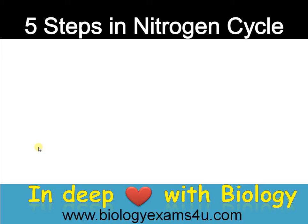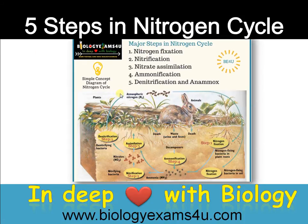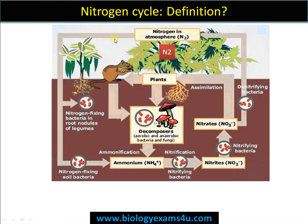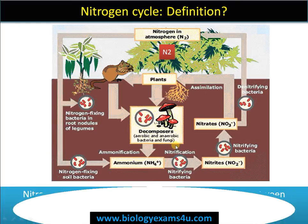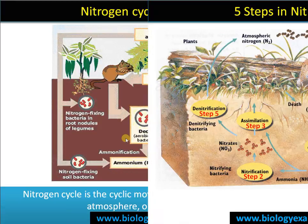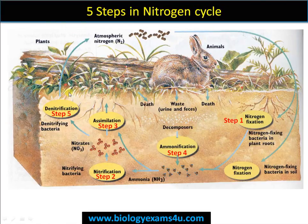Thanks for watching Biology Exams4U videos. Today the topic of our discussion is the five steps in the nitrogen cycle. We'll be discussing all these major steps: nitrogen fixation, nitrification, nitrate assimilation, ammonification, and denitrification. The nitrogen cycle is a cycling of atmospheric nitrogen between the atmosphere, soil, and living organisms.